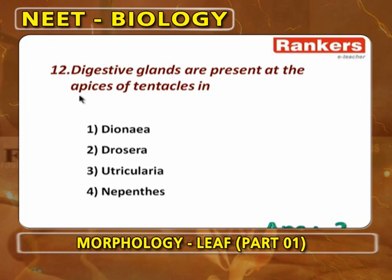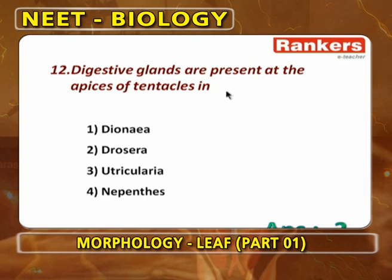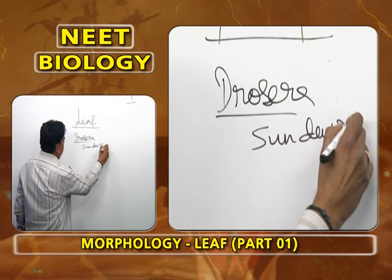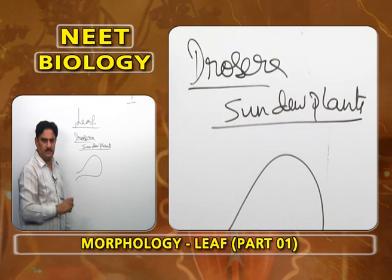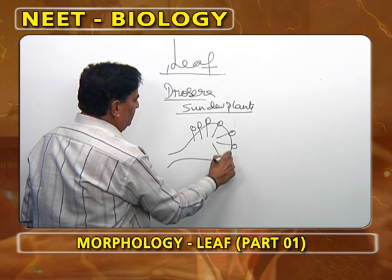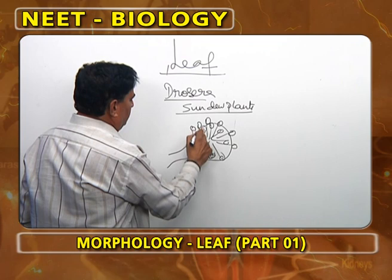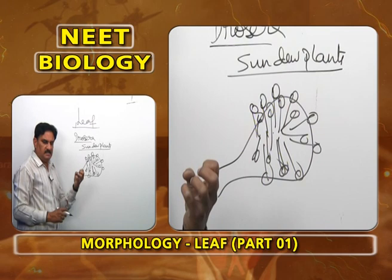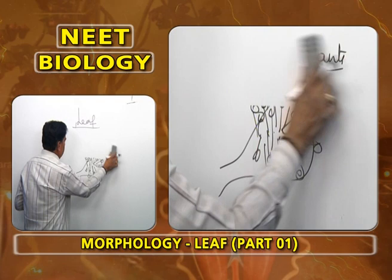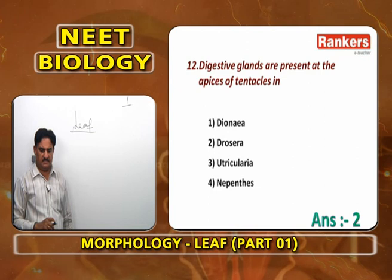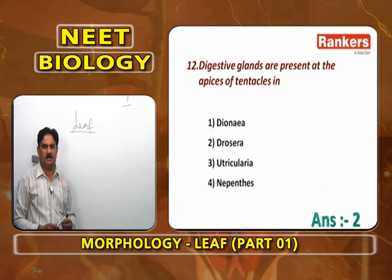Digestive glands are present at the apices of tentacles in Drosera. Drosera is popularly called the sundew plant. Its spatulate (spoon-shaped) leaves bear hundreds of glandular tentacles that secrete digestive juices. When an insect lands on the leaf, the tentacles close, kill and digest the insect.